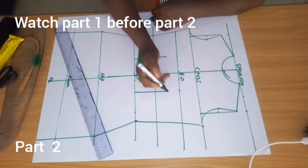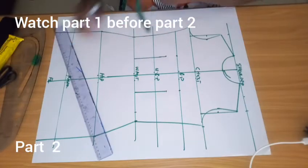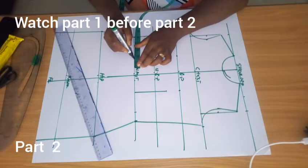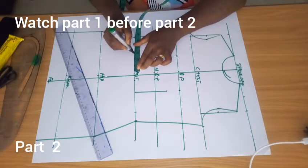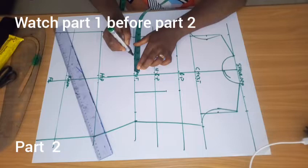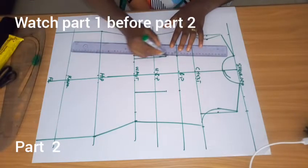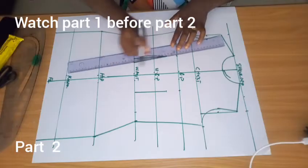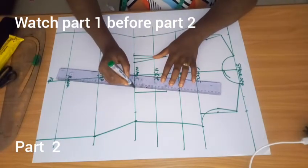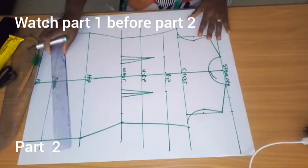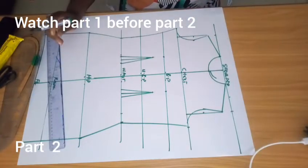This is the nipple point. You come down by one inch, by one and a half inch—one and a half inches. So I will take my dart at half an inch, half an inch. So I'll take my darts at half an inch.